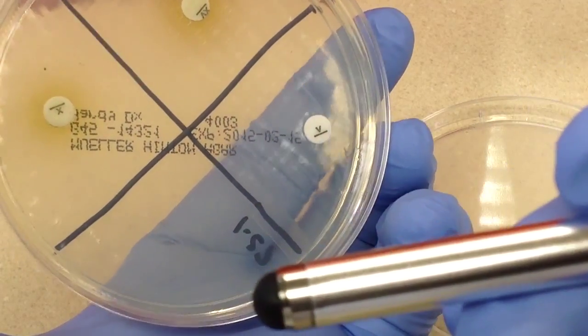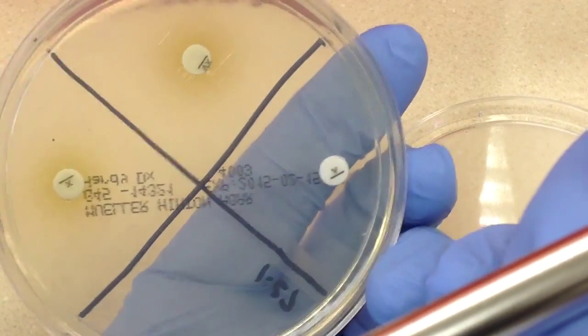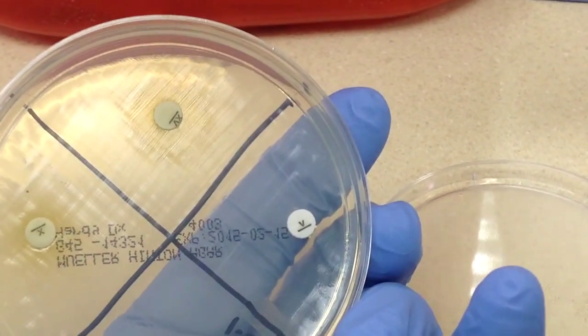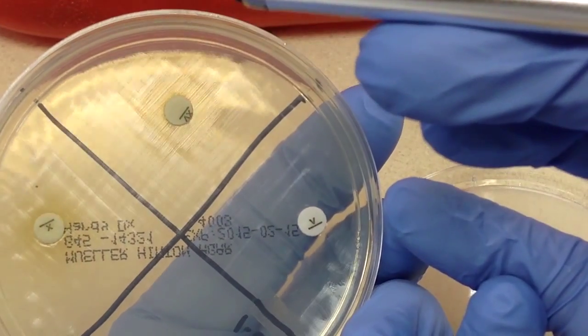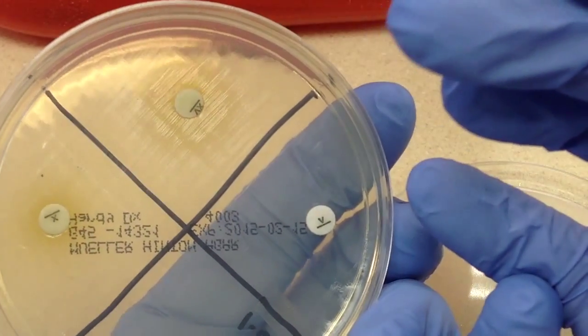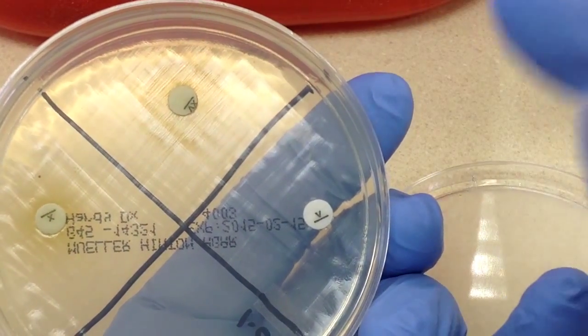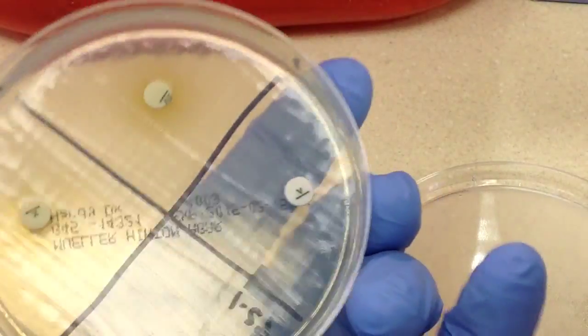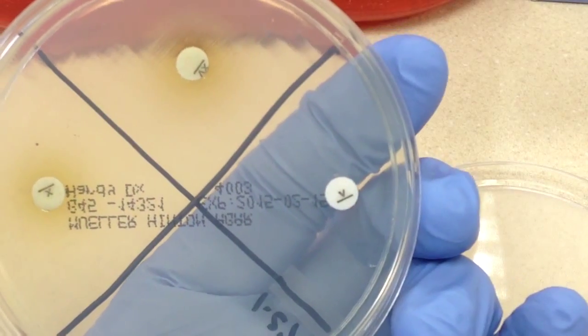And with Haemophilus influenzae, it needs both. So now I think we can see that around the X and V disc, excuse me, there is this round haze. And that is what we're looking for. So this test has proven or shown that what's on this plate is Haemophilus influenzae.